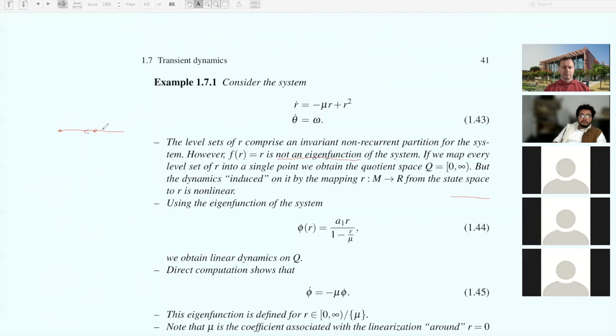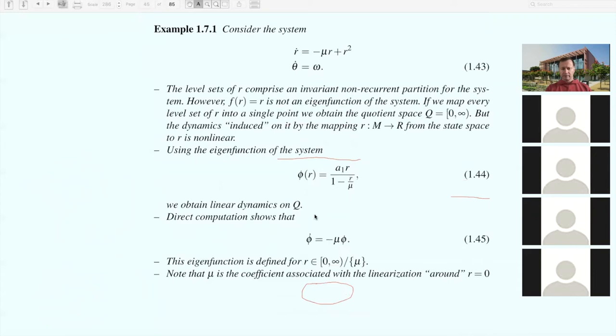It does so really on the whole zero infinity line, except at mu. At mu, which is positive, if R equals mu, the function itself blows up. So this is an eigenfunction almost everywhere. The only place where it's not an eigenfunction is at the fixed point mu, which is unstable. At R equals zero, this is zero. It blows up at this point but it's defined everywhere else.